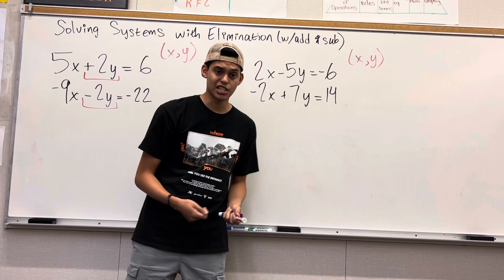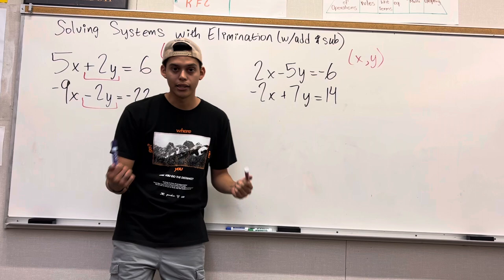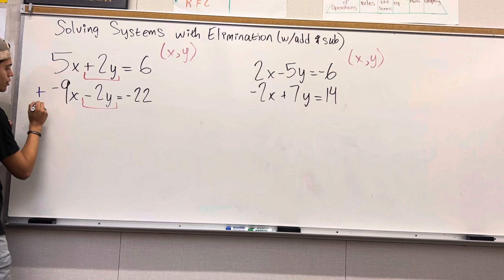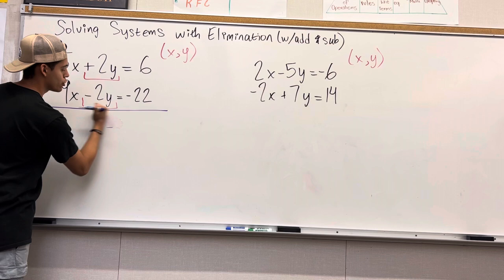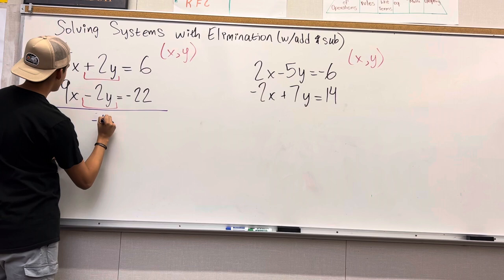So right here we have this 2y and this minus 2y. We are looking for that because we want to cancel it out. And we are seeing that these y's are going to cancel out because 2y minus 2y will give you 0y. We don't have to write it but I just wanted to show you guys that it is 0y. So 5x minus 9x would give you negative 4x. 6 minus 22 would give you negative 16.